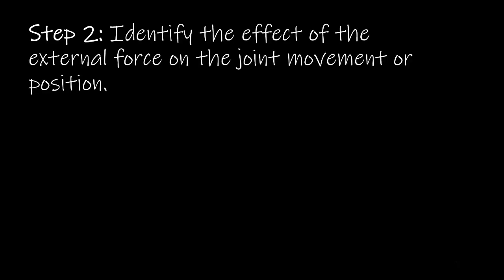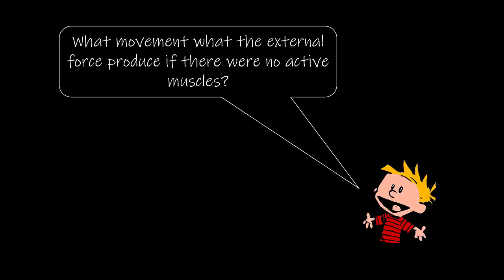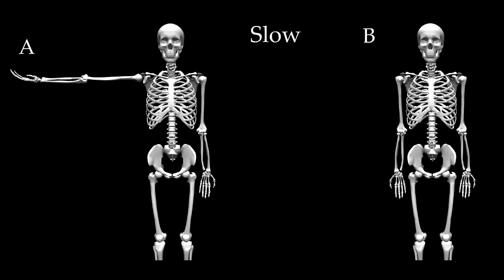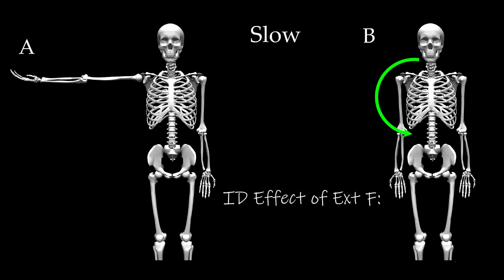Step 2 is to identify the effect of the external force on the joint movement or position. We ask ourselves: what movement would the external force produce if there were no active muscles? As we go from A to B, we see that the effect of gravity would be to lower the arm towards the body — in other words, the effect of the external force would be glenohumeral adduction. From our perspective, this would be a counter-clockwise rotation of the humerus.